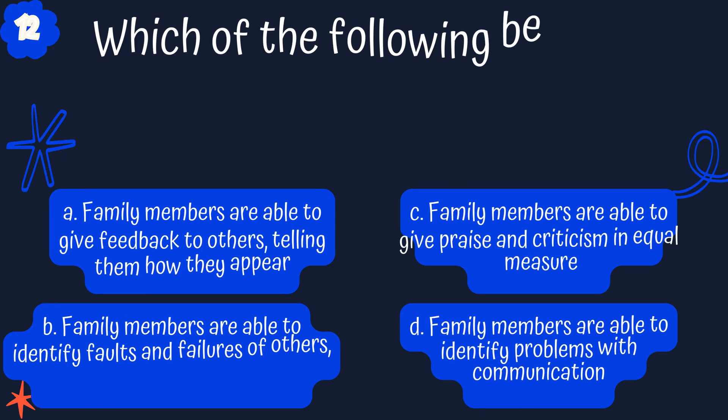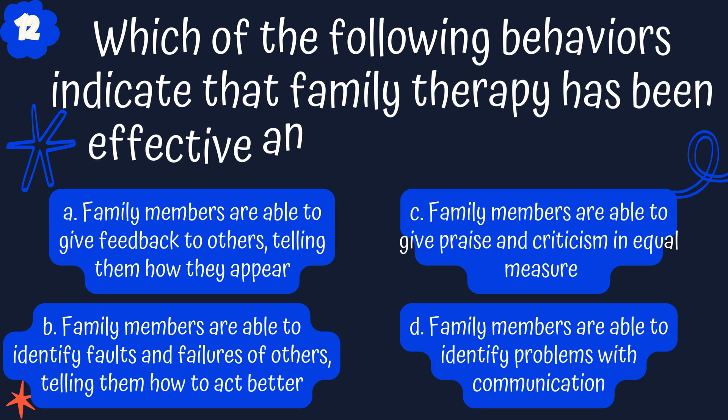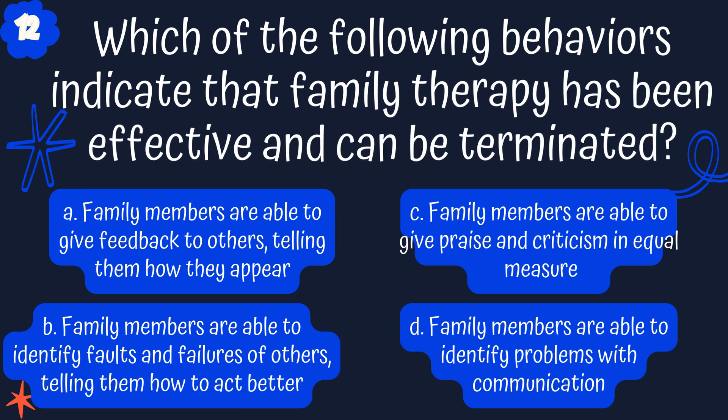Last question, 12. Which of the following behaviors indicate that family therapy has been effective and can be terminated? A. Family members are able to give feedback to others, telling them how they appear. B. Family members are able to identify faults and failures of others, telling them how to act better. C. Family members are able to give praise and criticism in equal measures. Or D. Family members are able to identify problems with communication.